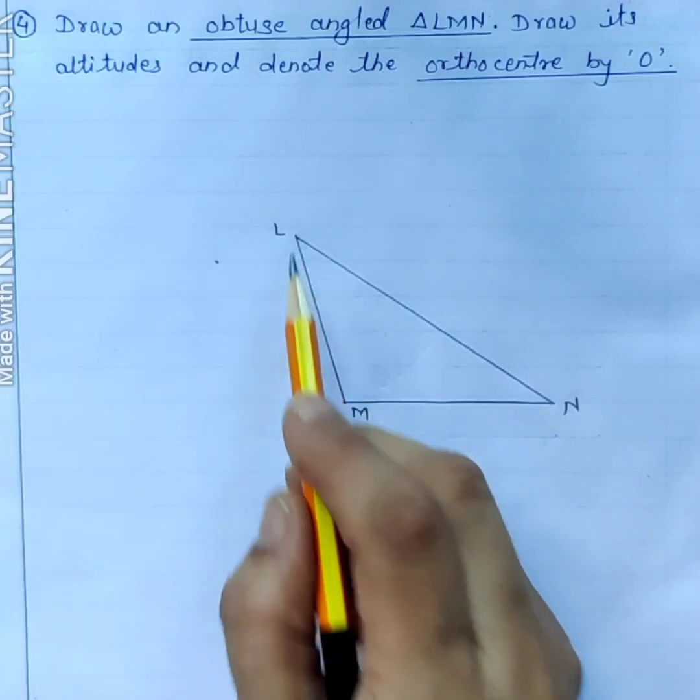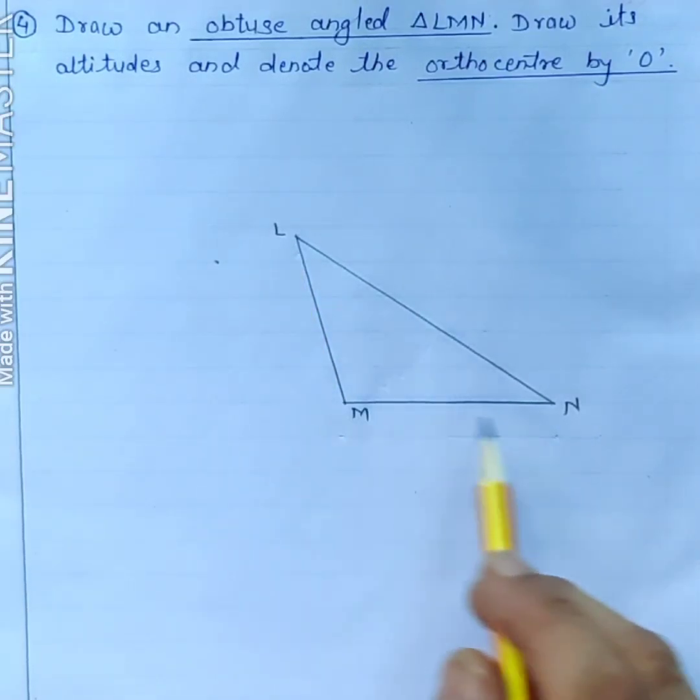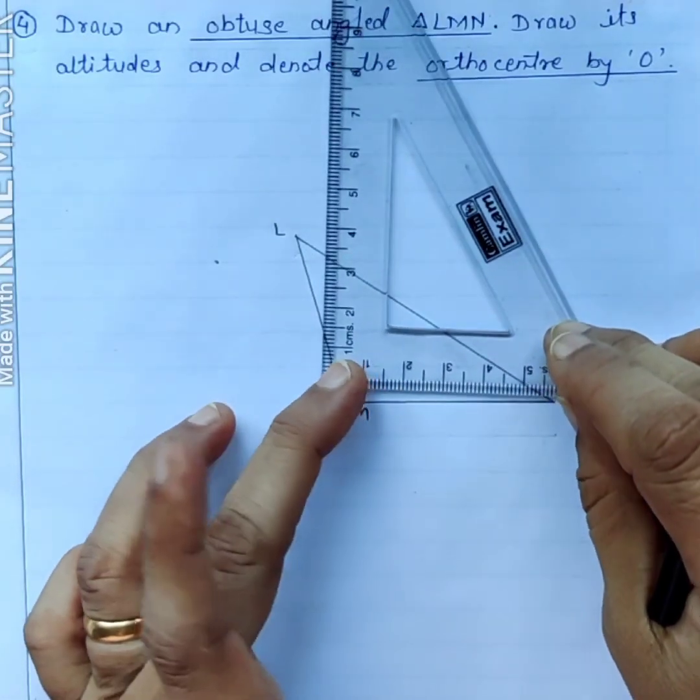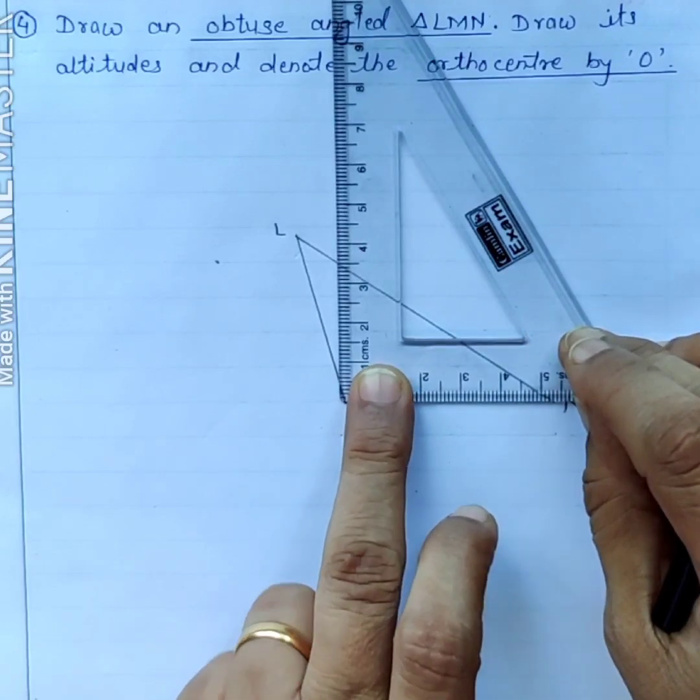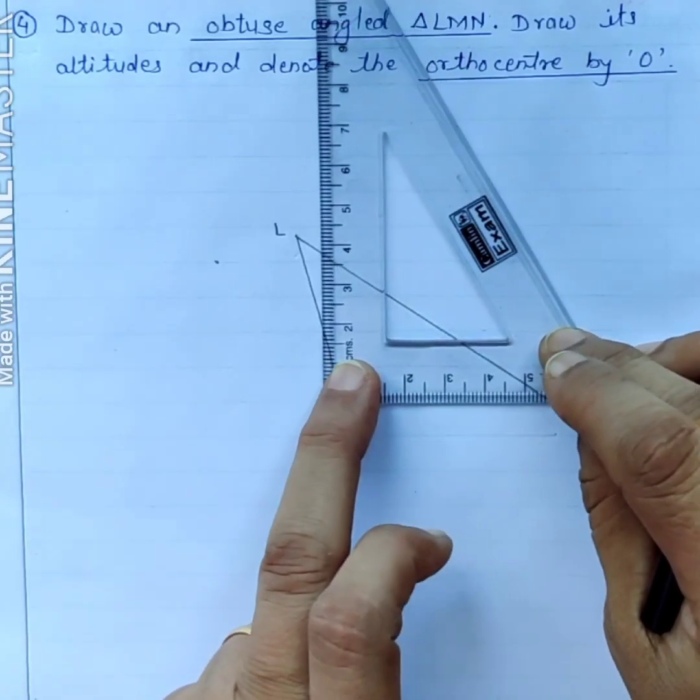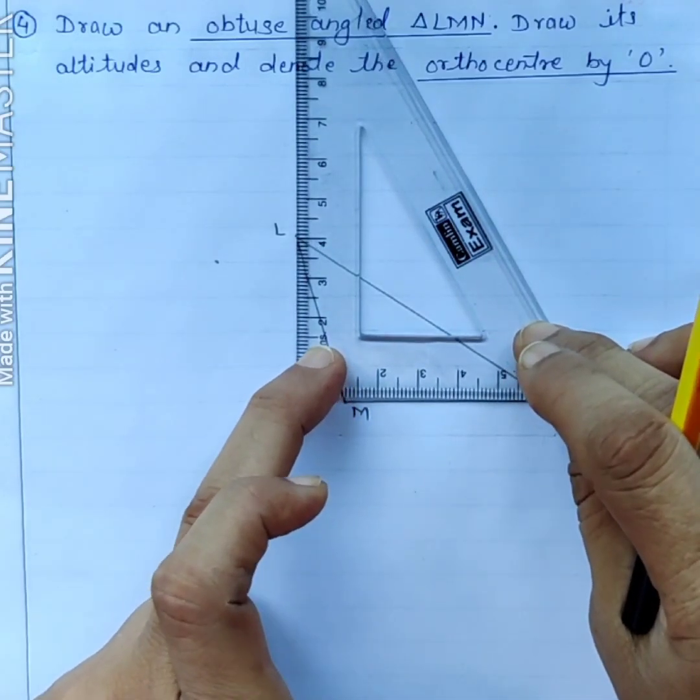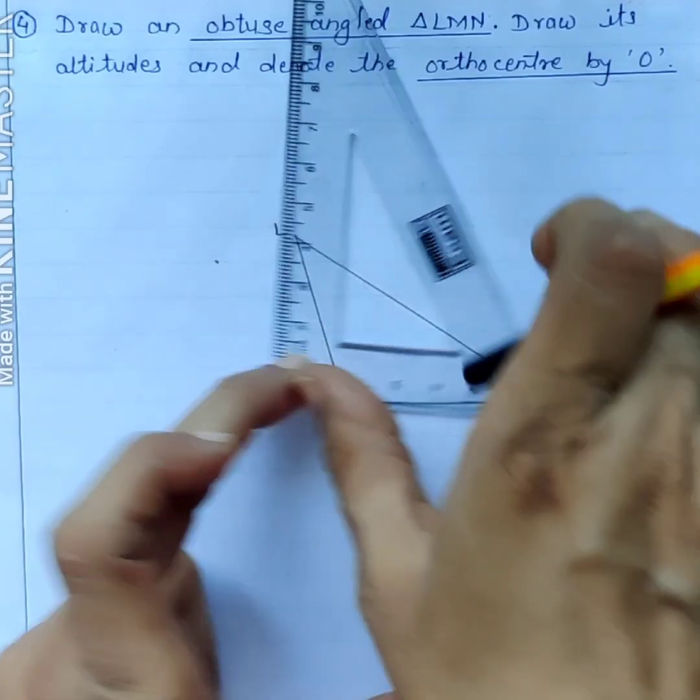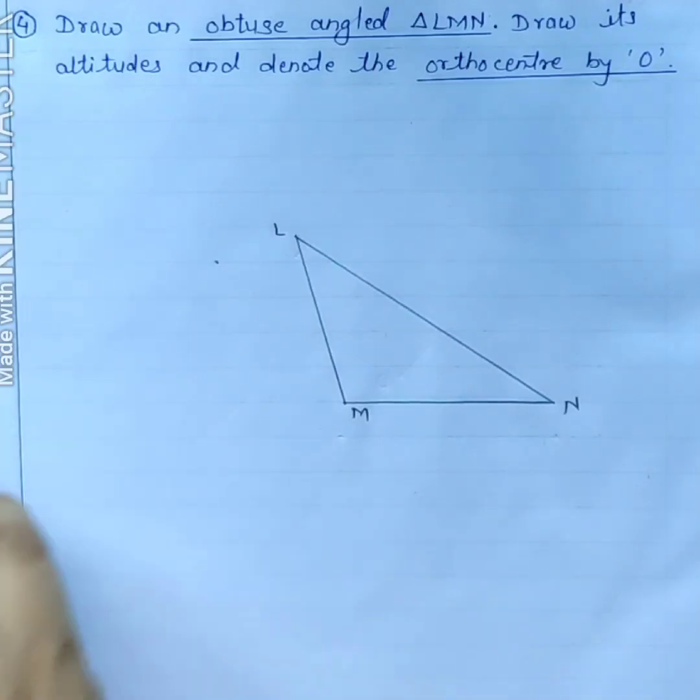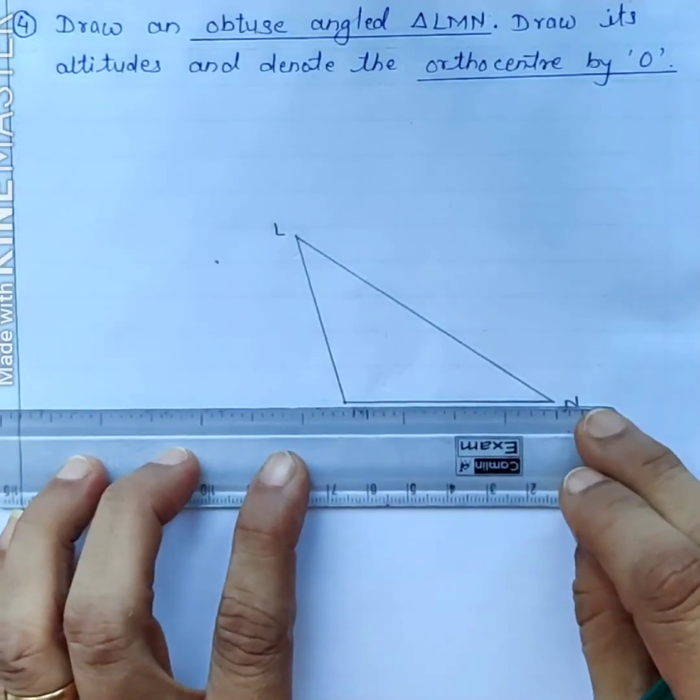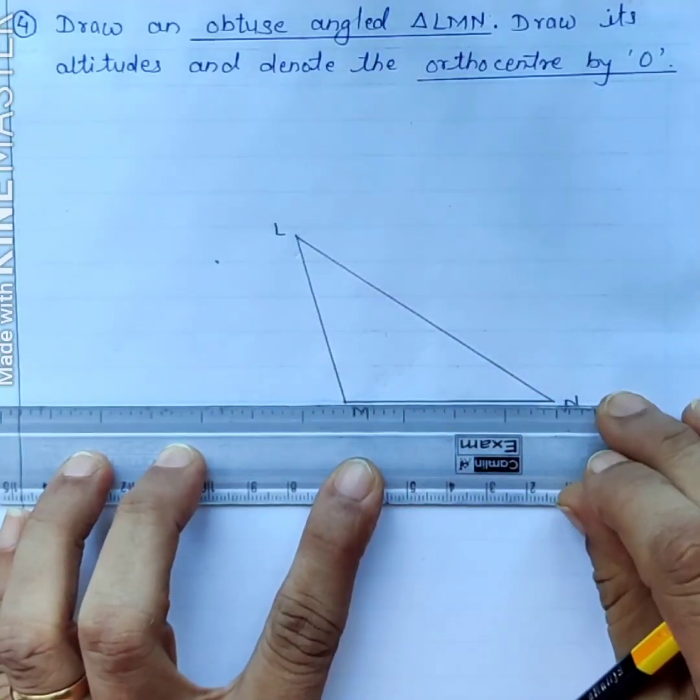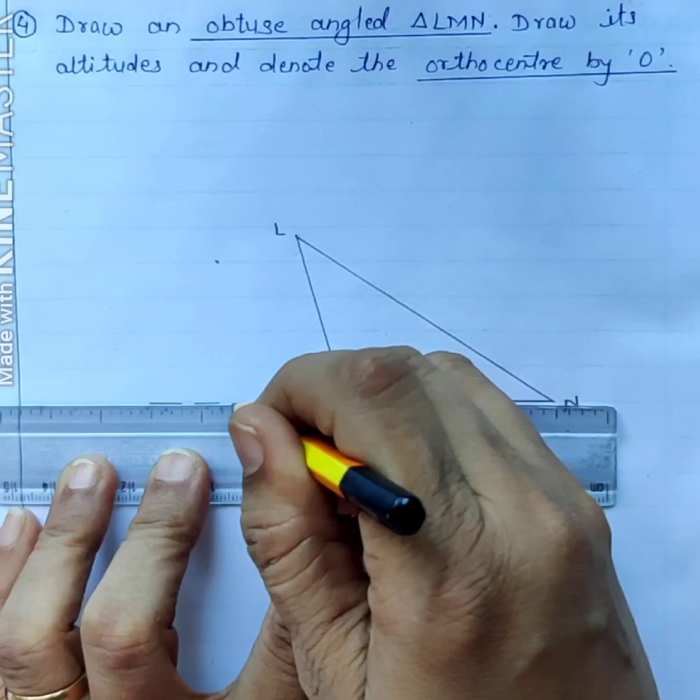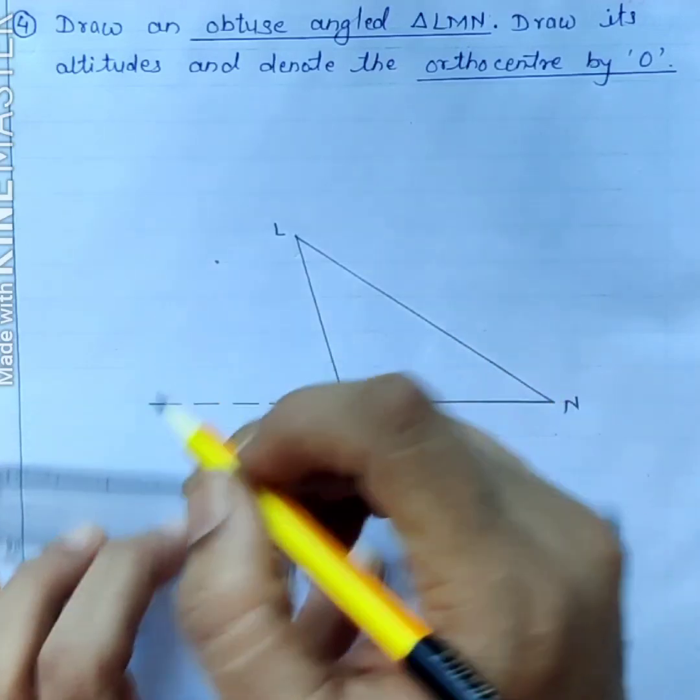From this vertex L we will draw perpendicular on this side MN. If we try to draw perpendicular on this side MN from the vertex L, it will not come in the interior of the triangle. So it will be in the exterior of the triangle. So we have to extend the side MN like this.